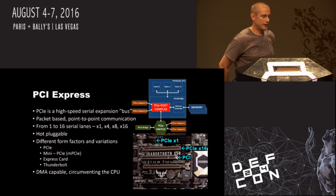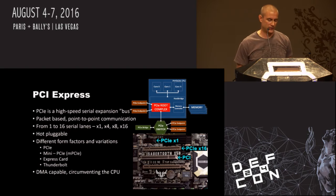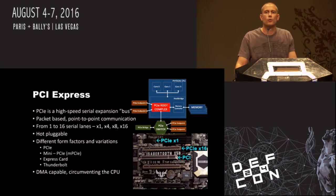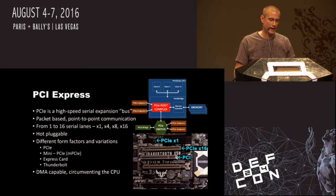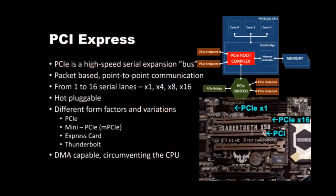What makes all this possible is of course PCI Express. PCI Express is a high speed serial expansion bus — or not really a bus since it's point-to-point communication, but anyway it's packet based. You have the PCI Express root complex anchored within the CPU chip. From this root complex you have several serial lanes that you can connect PCI Express endpoints to. You can also connect PCI Express switches and bridges. So PCI Express forms a small device network within a computer.